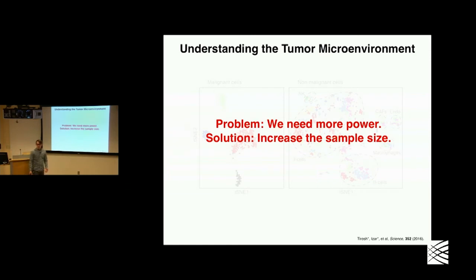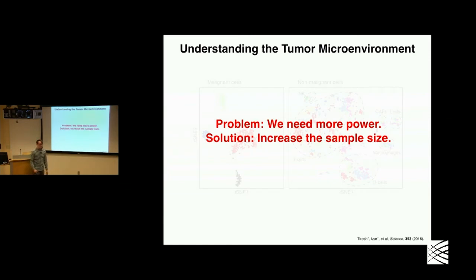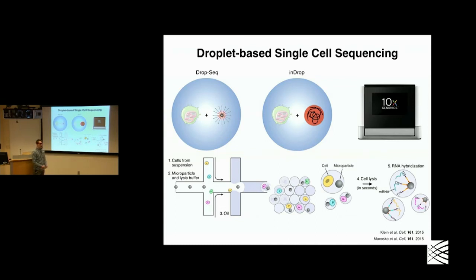Being from the GWAS world, that was my solution. But fortunately, around town there was another revolution going on. People like Evan McCosco and Alain Klein and Alex and Aviv had come up with the idea that you could barcode cells early in processing pipelines and then combine the transcriptomes for ensemble processing.